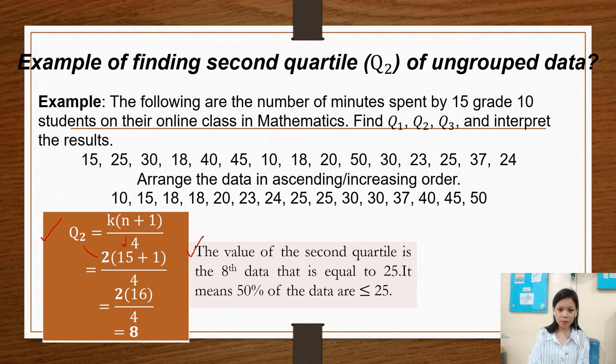So let us count: 1, 2, 3, 4, 5, 6, 7, 8. So this 25 is the second quartile. It means 50% of the data is less than or equal to 25.